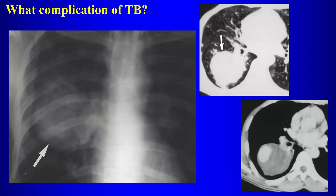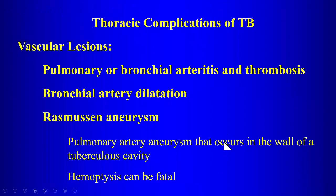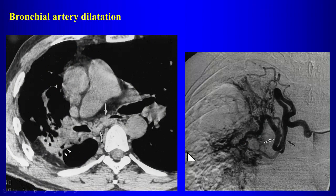A Rasmussen aneurysm is a large pseudo-aneurysm, usually of a pulmonary artery branch. These tend to occur near the walls of cavities as the cavity erodes into the pulmonary artery, causing aneurysm or pseudo-aneurysm formation. Hemorrhage is a major complication of Rasmussen aneurysm.